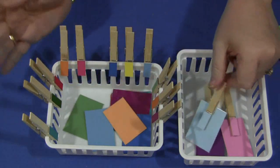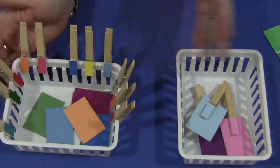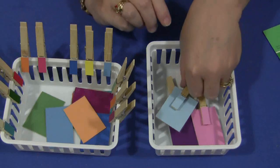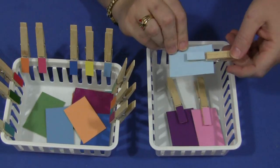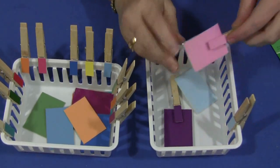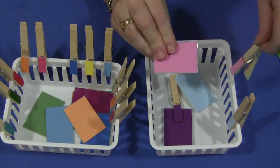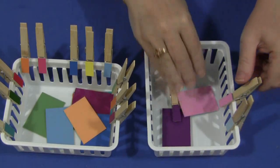Then at the end of the activity, once they've matched all those, depending upon the age level of the children in your early learning environment, they can go ahead and then reset this up themselves by putting the clothespins back on the basket and then the paint samples back into the basket as well.